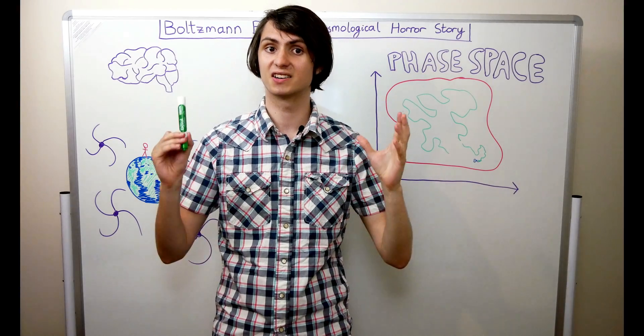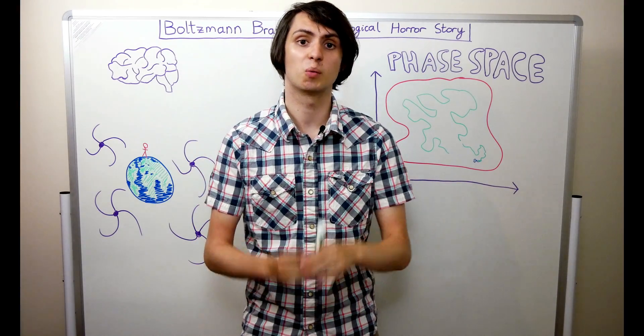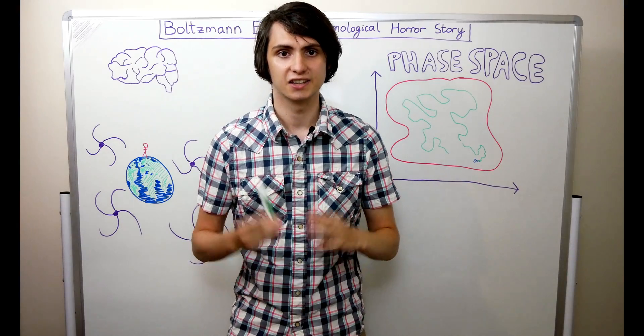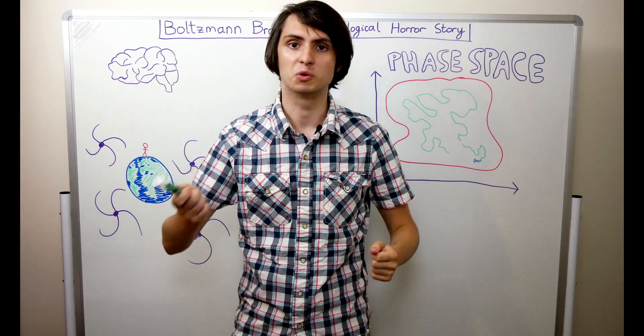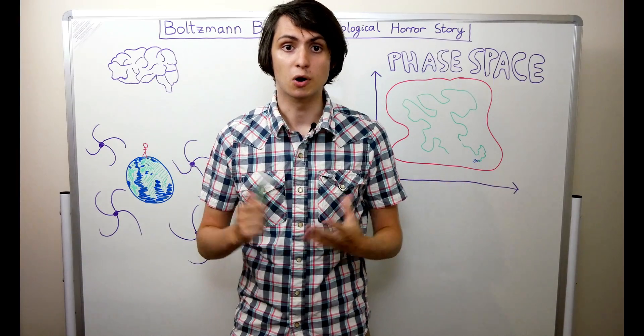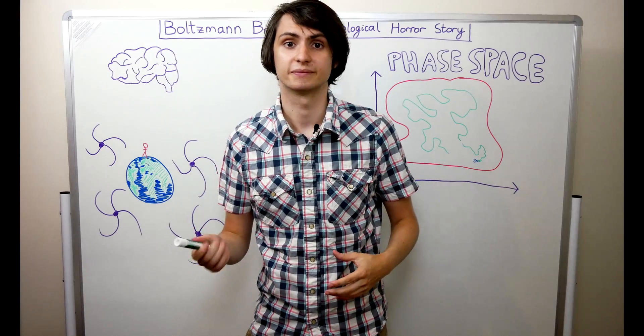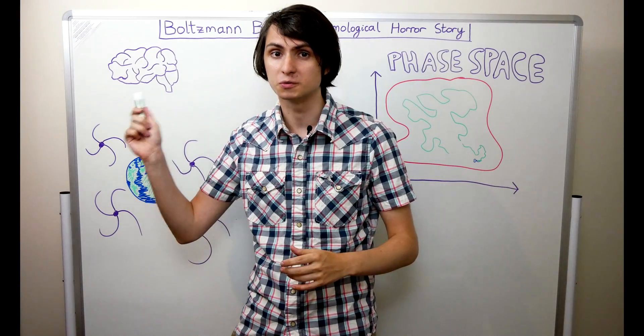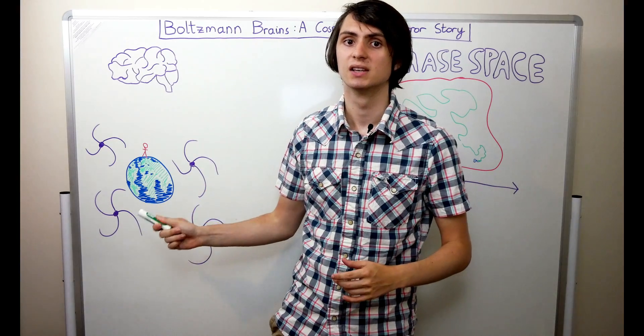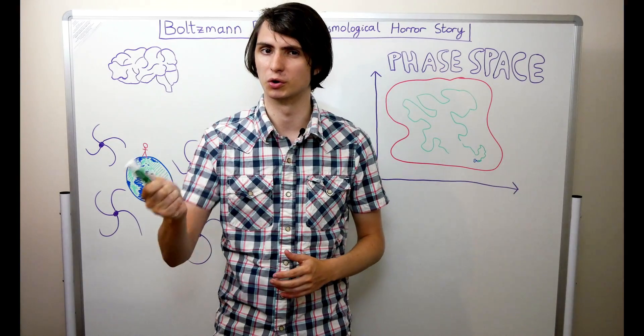Fortunately, our continuing experience tells us that we're not Boltzmann brains. This means either that we're unimaginably lucky or that something is wrong with Boltzmann's model of the universe. Most cosmologists believe the latter. If a model of the universe or a multiverse predicts that there are more Boltzmann brains than ordinary observers, then there must be something wrong with the model.